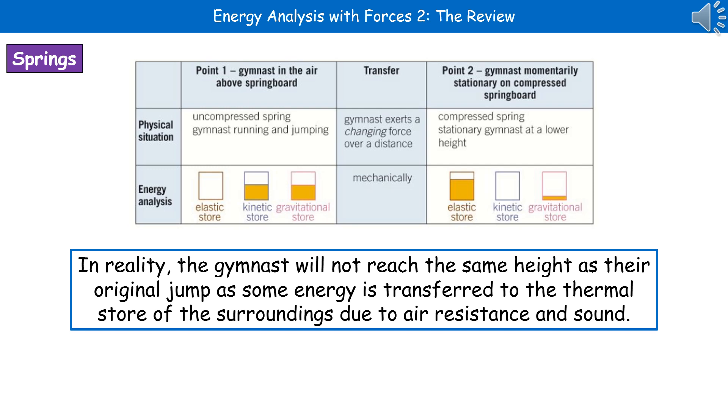We've got a mechanical transfer because we've got a changing force over a distance. Then in our end result, the kinetic store is empty because the gymnast is stationary. We're at a lower height, so the gravitational store is reduced. The total from the kinetic and the gravitational that we've now lost is actually transferred to the elastic store. So you just add them up and put that overall height in there.